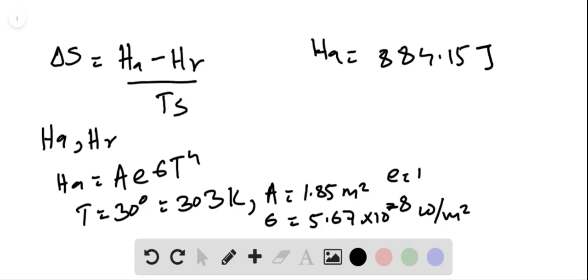Heat absorbed by the person from the air in one second is given by HR, which equals A times E times sigma times TS to the fourth, where TS is the temperature of the air. The subscript R denotes that the heat is radiated by air in one second.